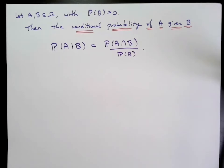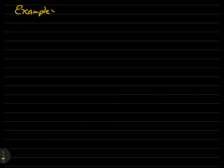If B has zero probability, then this conditional probability is not defined. Here's one example. We're going to roll one six-sided die, and let X be the value that we get. X can be anywhere from one to six, and each outcome has probability one-sixth.